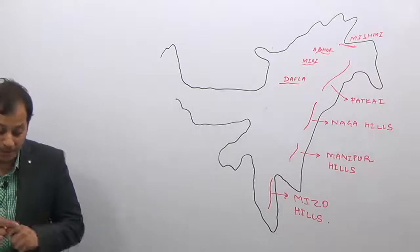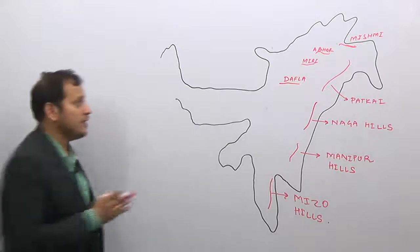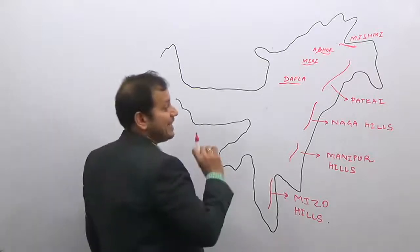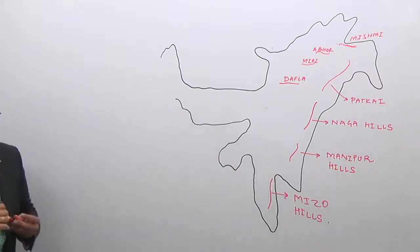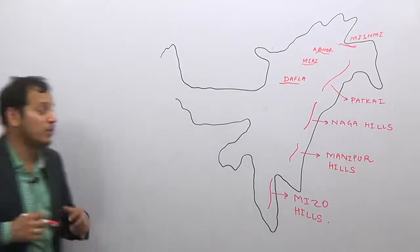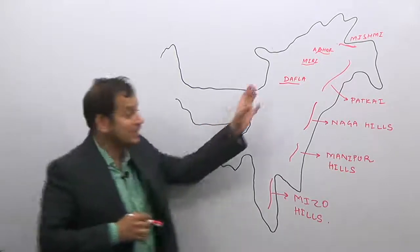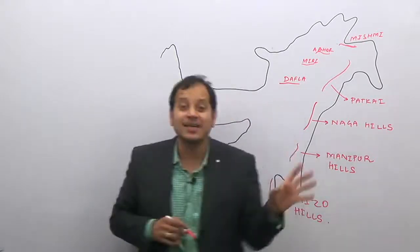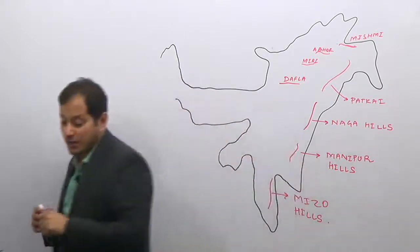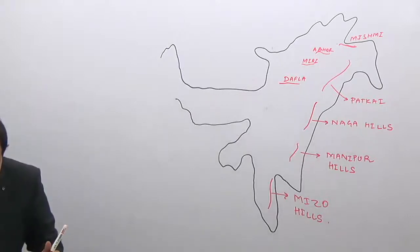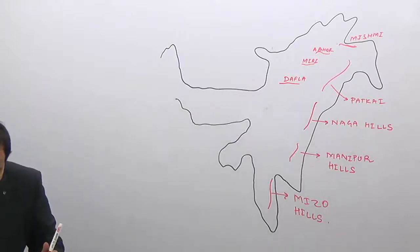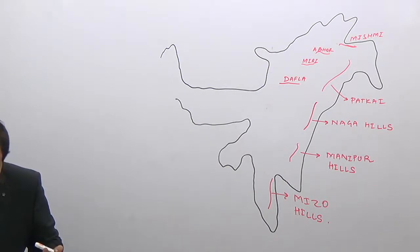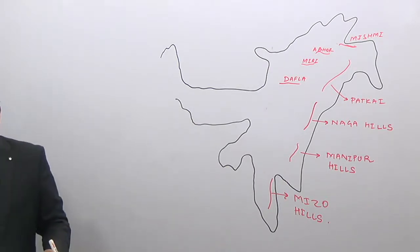And then Mizo hills. These are the important map-based questions of the eastern Himalayas: Daffla, Miri, Abhor, and Mishmi — these are the names of the Shivaliks in the state of Arunachal Pradesh. And then Patkai, Naga, Manipur, and Mizo hills. These are the important hills in this region.